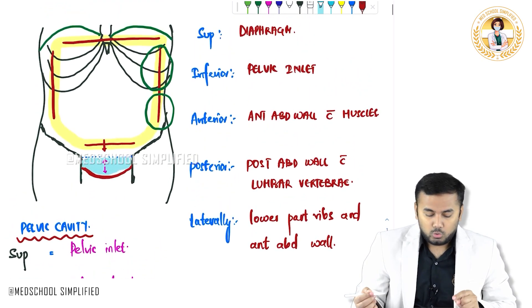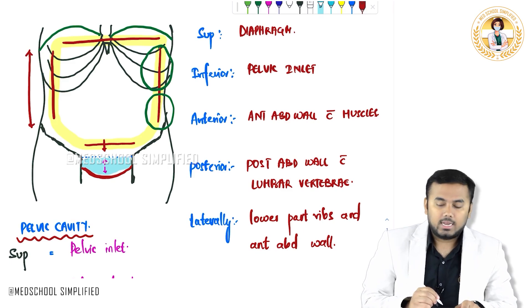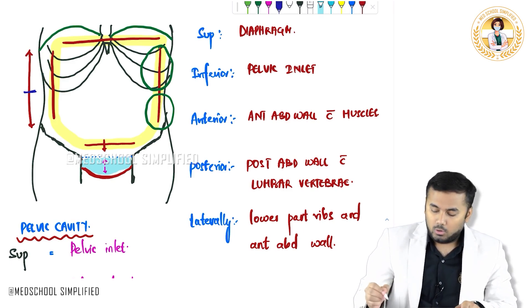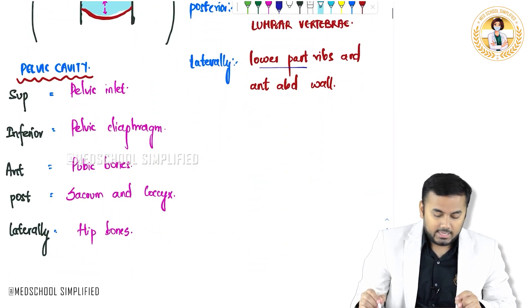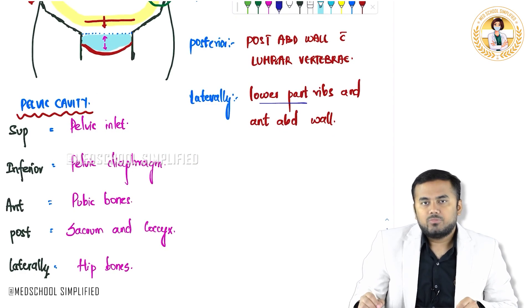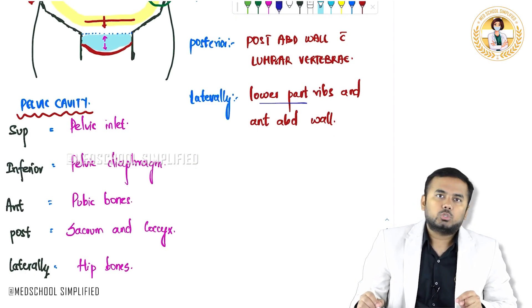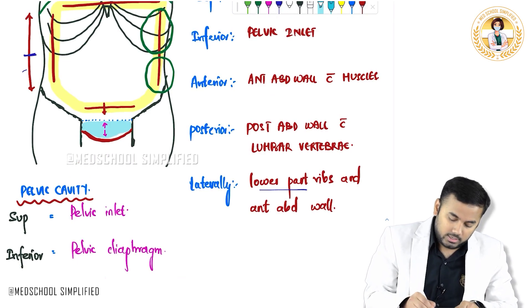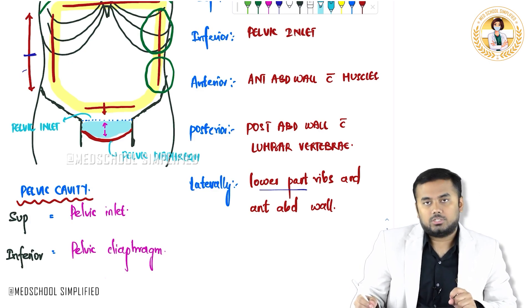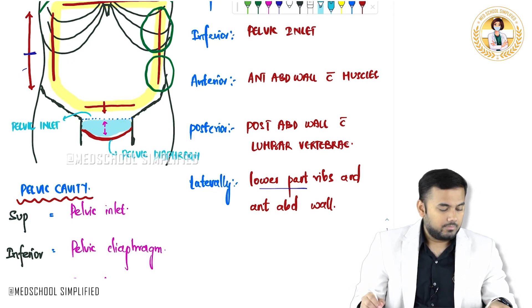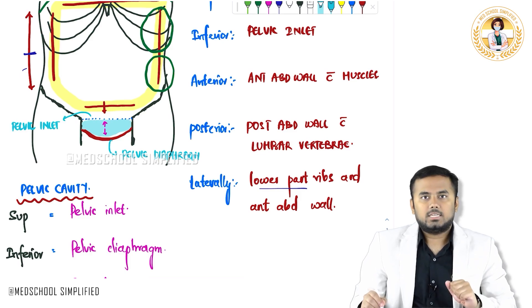Laterally you have got two parts — the upper part is the lower part of the ribs and the anterior abdominal wall in the lower part. This comprises the abdominal cavity. In the pelvic cavity — this small blue color shaded area — superiorly we have got pelvic inlet, inferiorly we have got pelvic diaphragm.